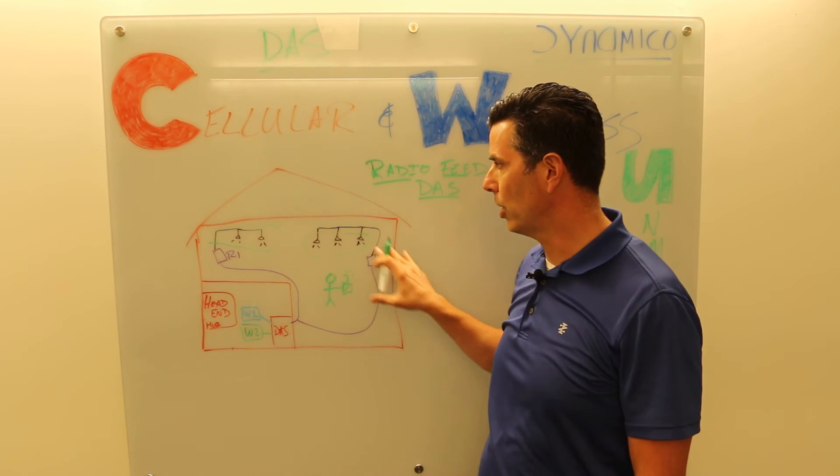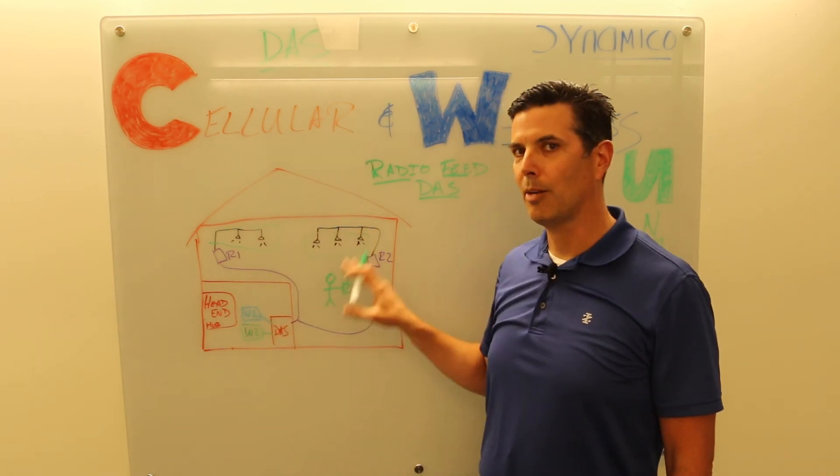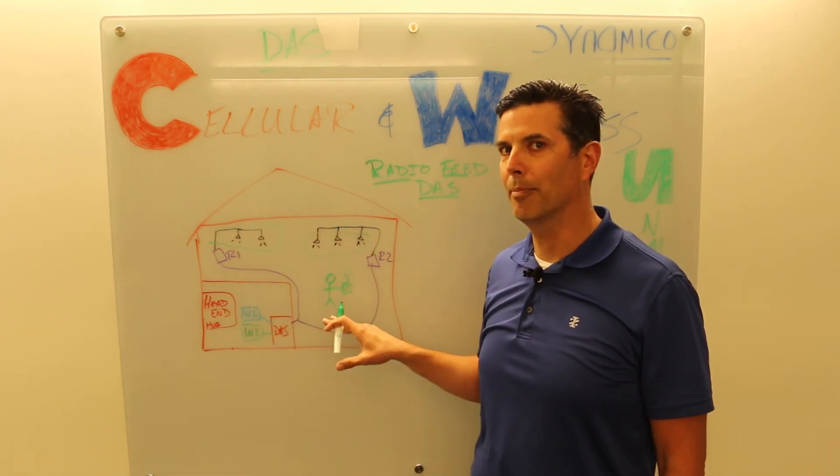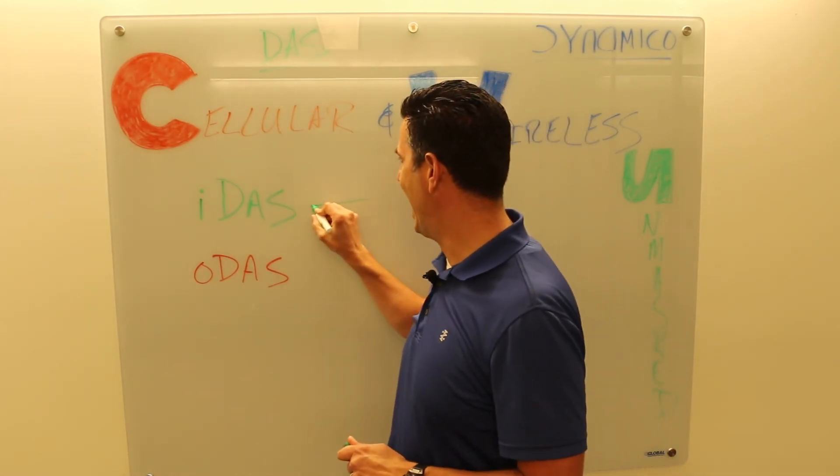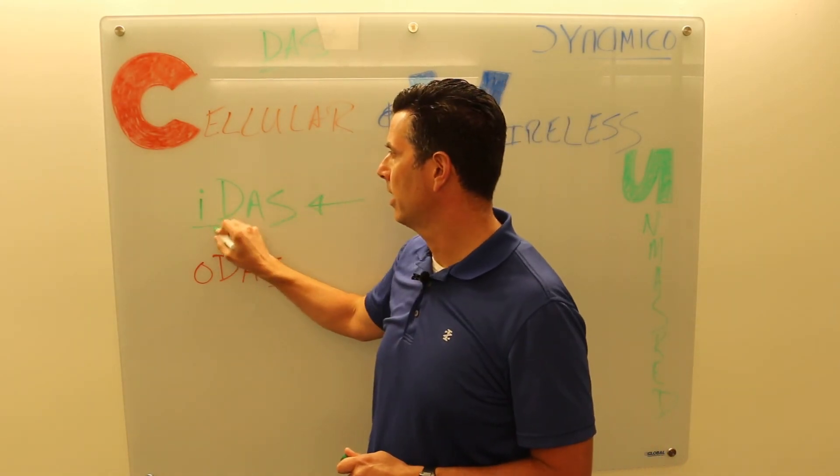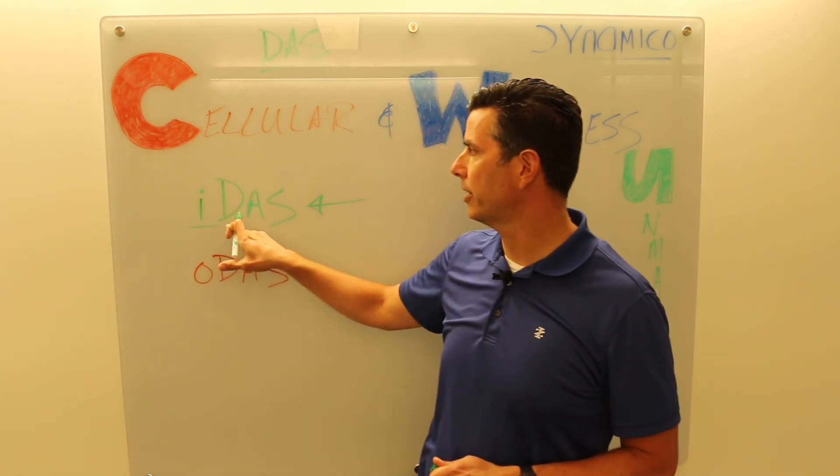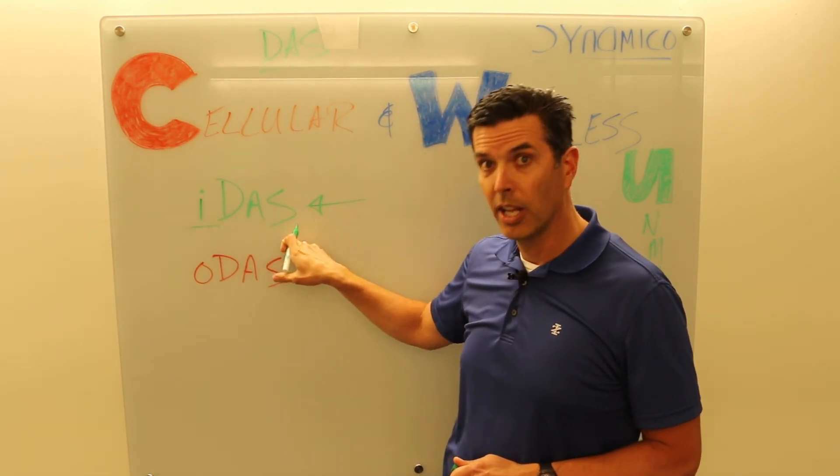Okay, we'll talk about a couple of small things and we'll wrap this up. So today we've been talking primarily about IDAS, indoor DAS. The I stands for indoor. Again, distributed antenna systems. There is also an ODAS, an outdoor distributed antenna system.